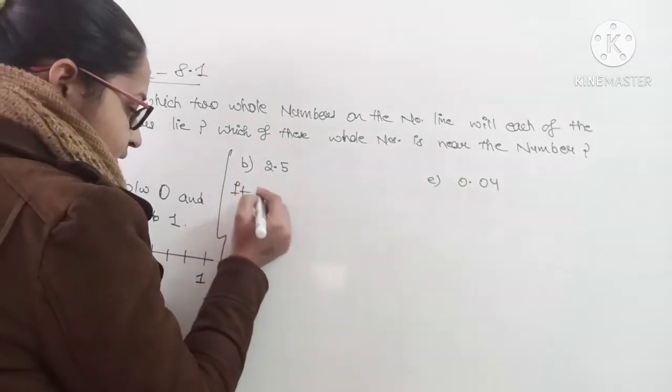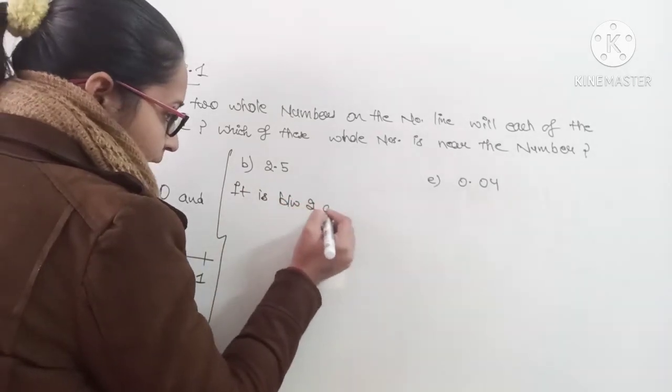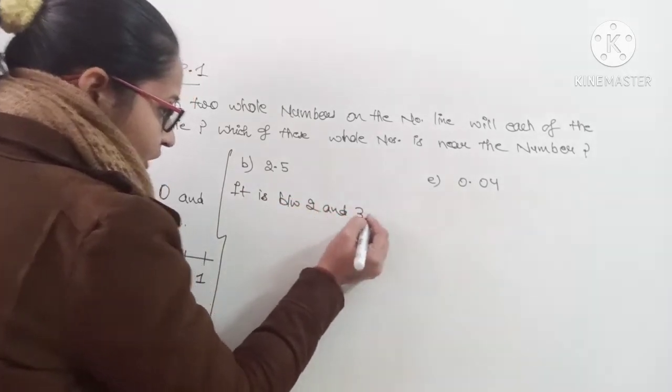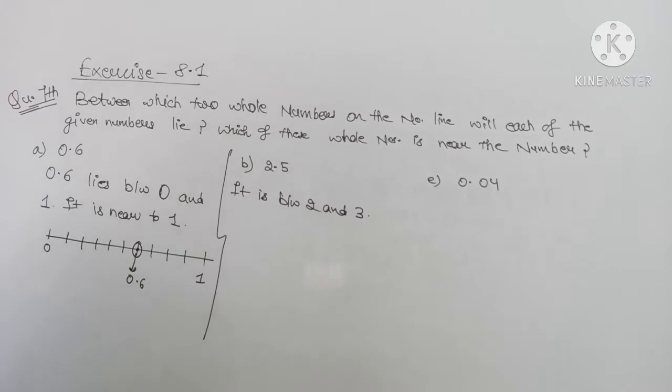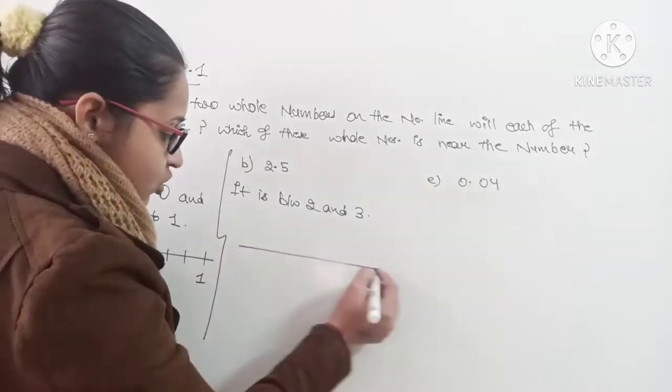So it is between 2 and 3. Now we have to tell it is near to which number. So where is 2.5?